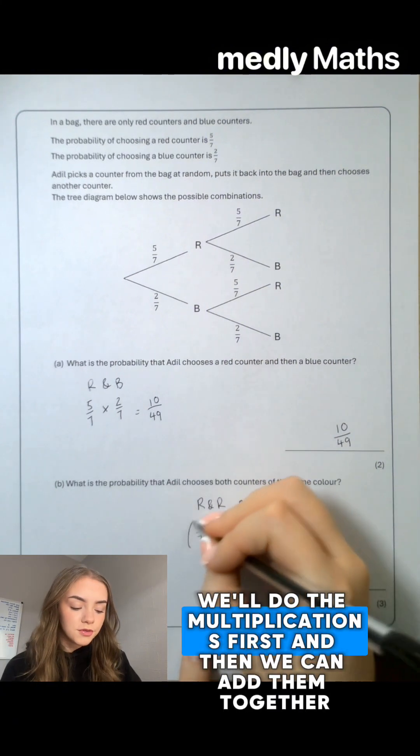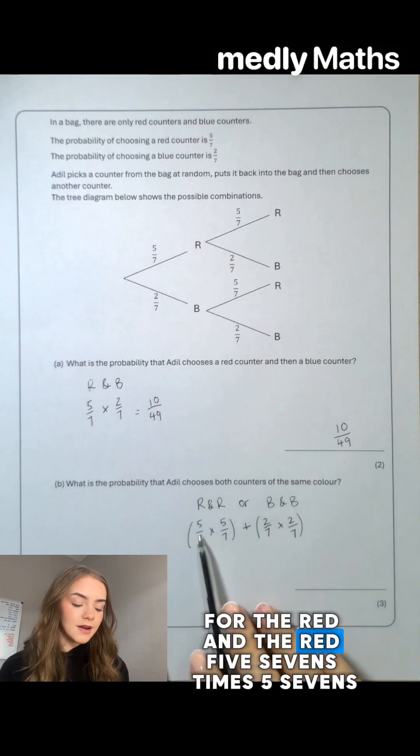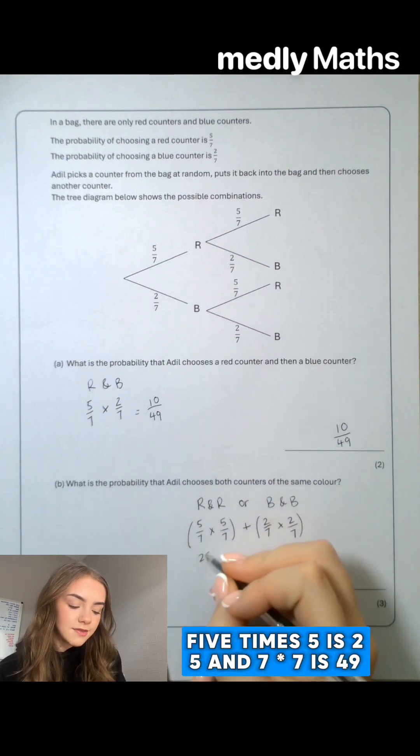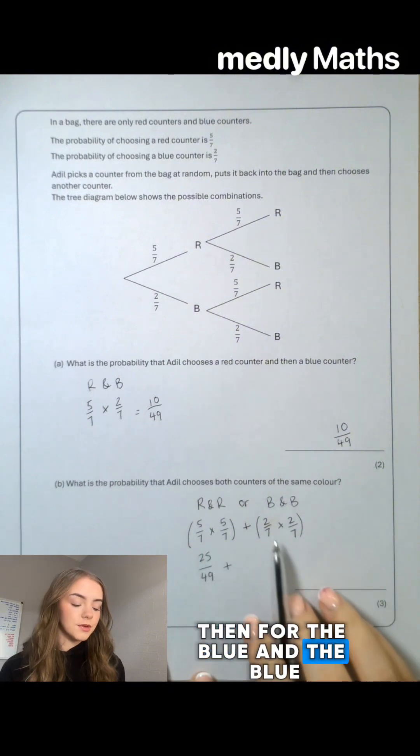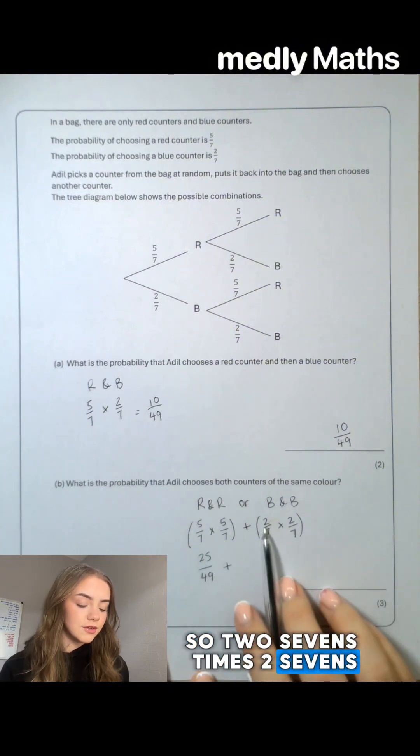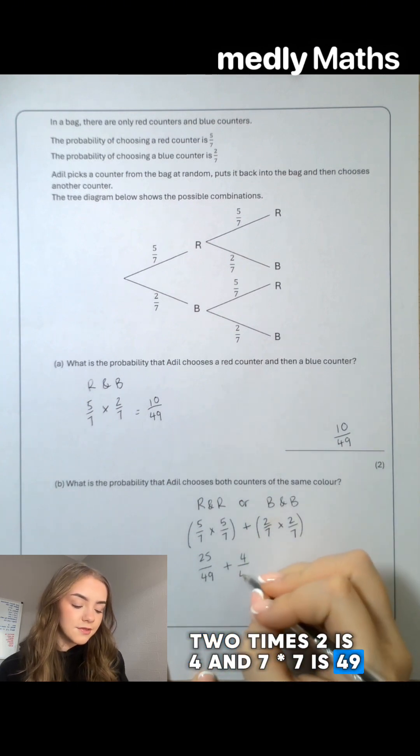Using BODMAS we'll do the multiplications first and then we can add them together. For the red and the red, 5 sevenths times 5 sevenths: 5 times 5 is 25 and 7 times 7 is 49. Then for the blue and the blue, so 2 sevenths times 2 sevenths: 2 times 2 is 4 and 7 times 7 is 49.